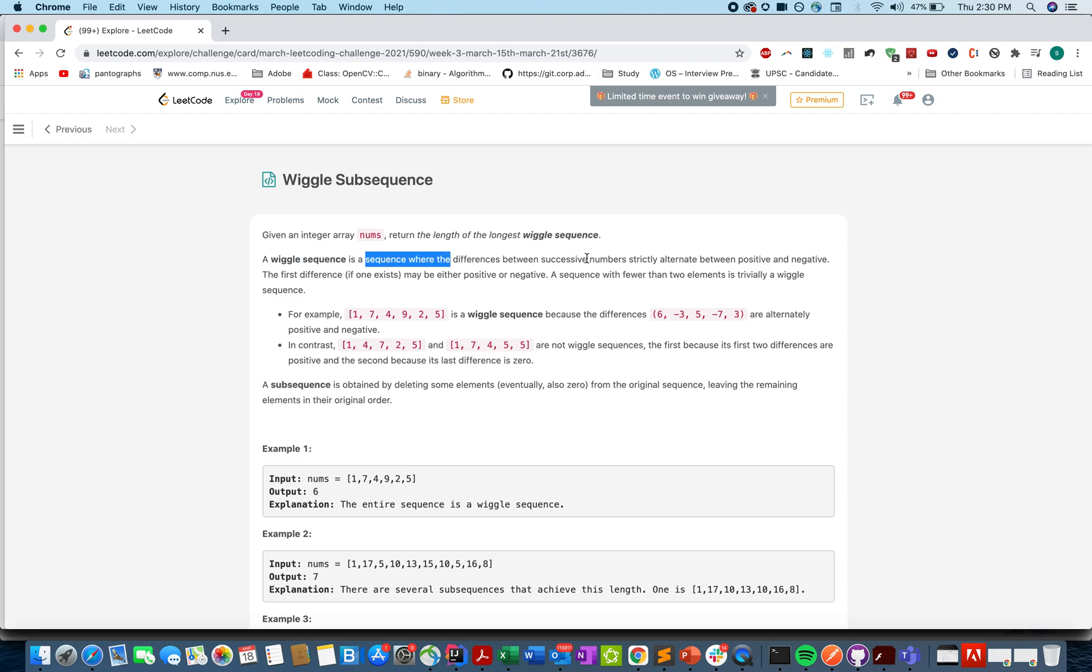What is the definition of a wiggle sequence? It is a sequence where the difference between successive numbers strictly alternates between positive and negative. The kind of structure they are looking for is up, down, up, down, up, down. We need to identify the longest length of such subsequence. For example, we have 1, 7, 4, 9, 2, 5 and the difference is 6, minus 3, then we have 5, then we have minus 7, and then we have 3. So this complete string is a wiggle sequence.